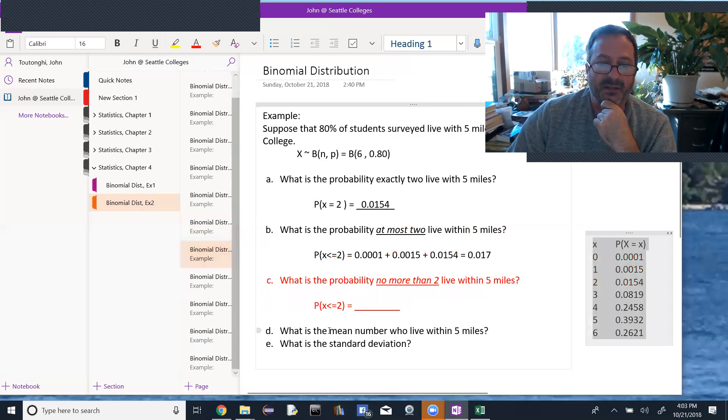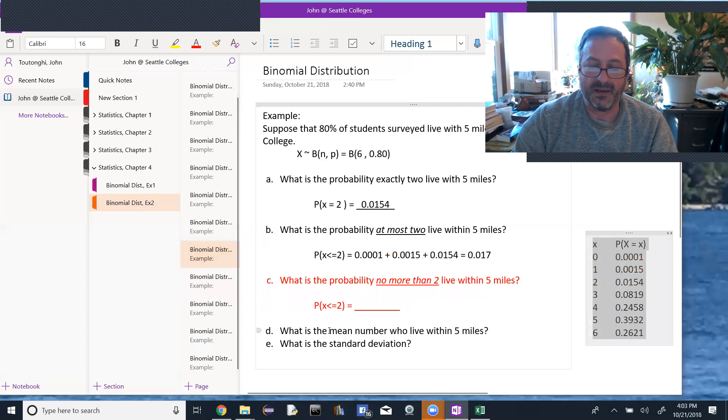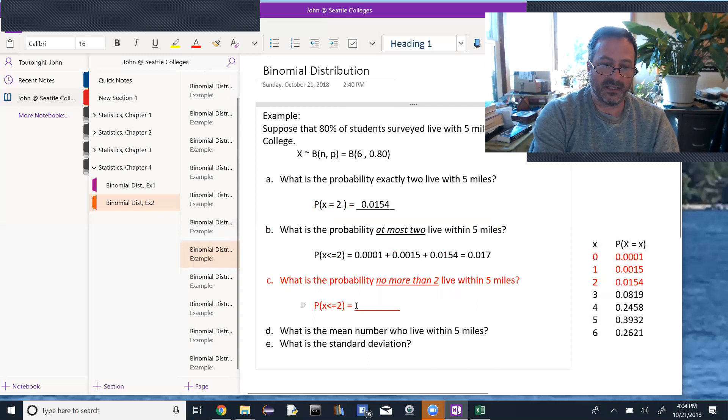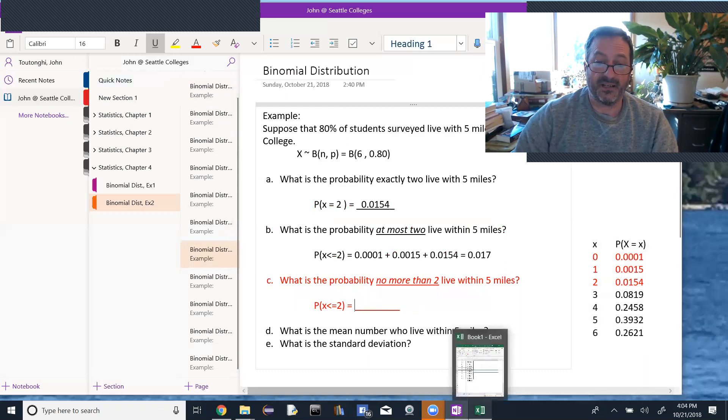The next part says, what's the probability no more than two live within five miles? And if you think about no more than two, more than two would be three, four, five, or six. So no more than two, again, it's the same three values from zero to one to two. So we could do this the same way and add those three values up, or we could use in Excel the binomial distribution function again, but with the cumulative value being true. So I'll show you how to do that in Excel.